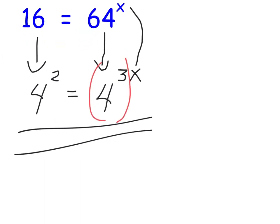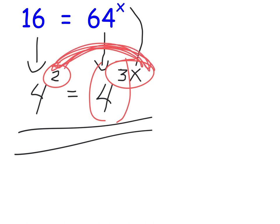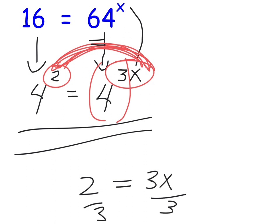Now, are the bases the same? Then the answer's already there — it's just this equals this. The answer's not glaringly obvious, but once the bases are the same, that equals that: 2 equals 3x. Divide by 3 — two-thirds.